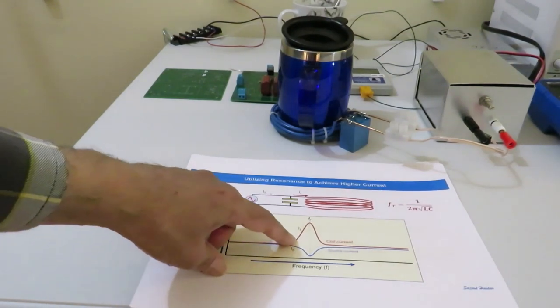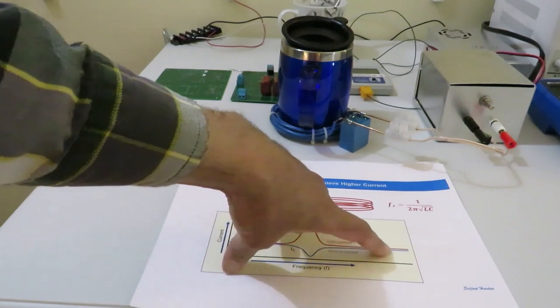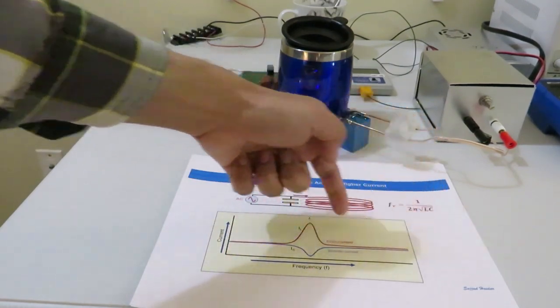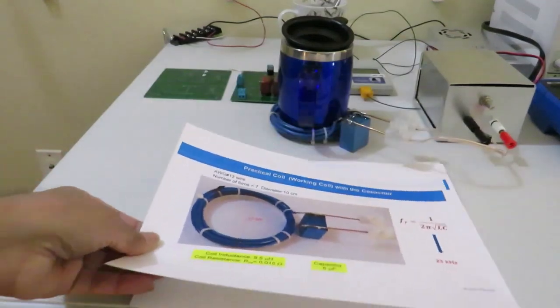And this slide shows how a current becomes very high at resonance. And the resonant frequency is represented by a formula that is also shown in this slide.